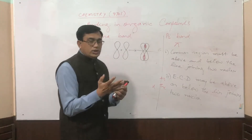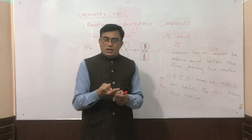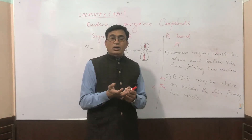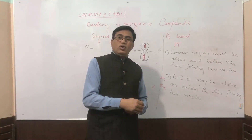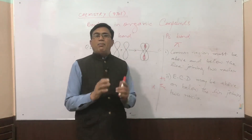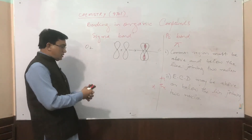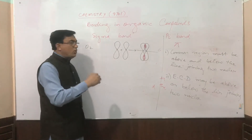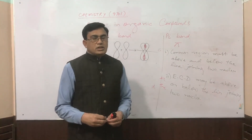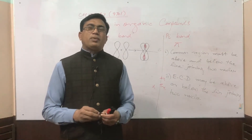It is important to note that all bonds which are formed first are definitely sigma bonds. All single bonds are always sigma bonds because they are established first. After the formation of a sigma bond, if any further bond is developed between the joined atoms, that will definitely be a pi bond. O2 is an example of a molecule in which, along with a sigma bond, there is a pi bond present. I have explained all the respective concepts regarding sigma and pi bonds — please comment, like, and subscribe to my YouTube channel for upcoming lectures.